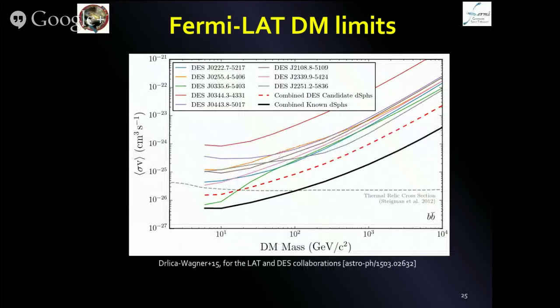These are the limits you could expect to get from these new candidates given our assumed J-factor. The dashed red line shows what you could get if you combined all of those predicted limits. You get an increase in power by combining these objects instead of looking at them individually, and the closest objects, like reticulum 2, are primarily driving these limits.